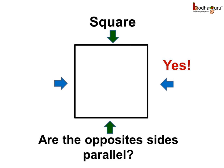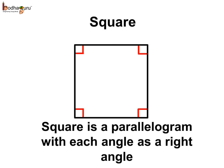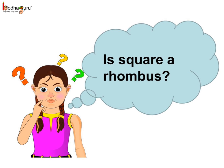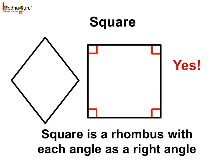Here, we have a square. Are the opposite sides parallel? Yes, they are. The opposite sides pointed by the blue-colored arrow are parallel, and the other opposite pair pointed by the green-colored arrow are also parallel. Hence, we can easily say a square is a parallelogram with each angle as a right angle. Yes, in a square too, all the sides are equal. Hence, we can say a square is a rhombus with each angle as a right angle.